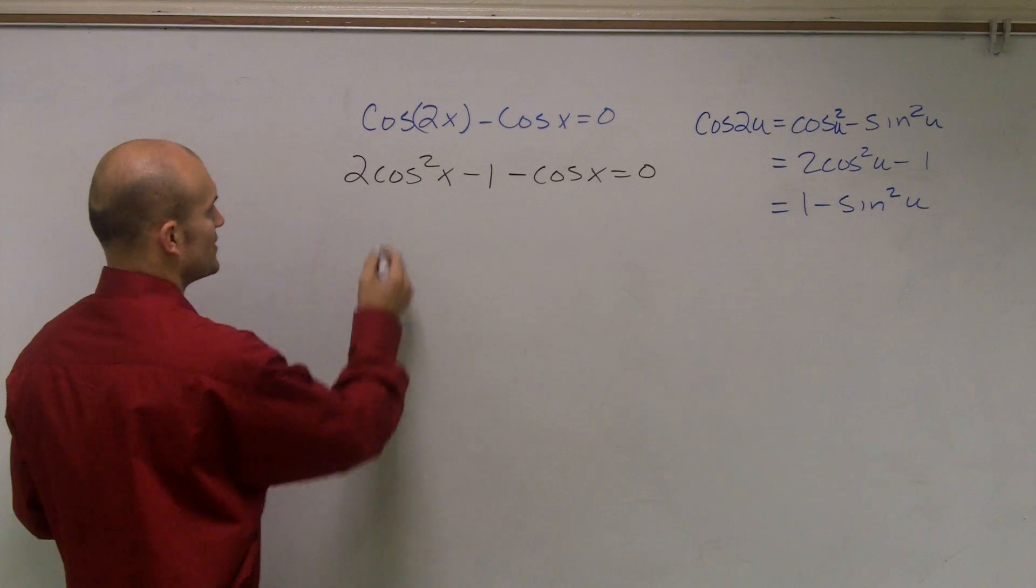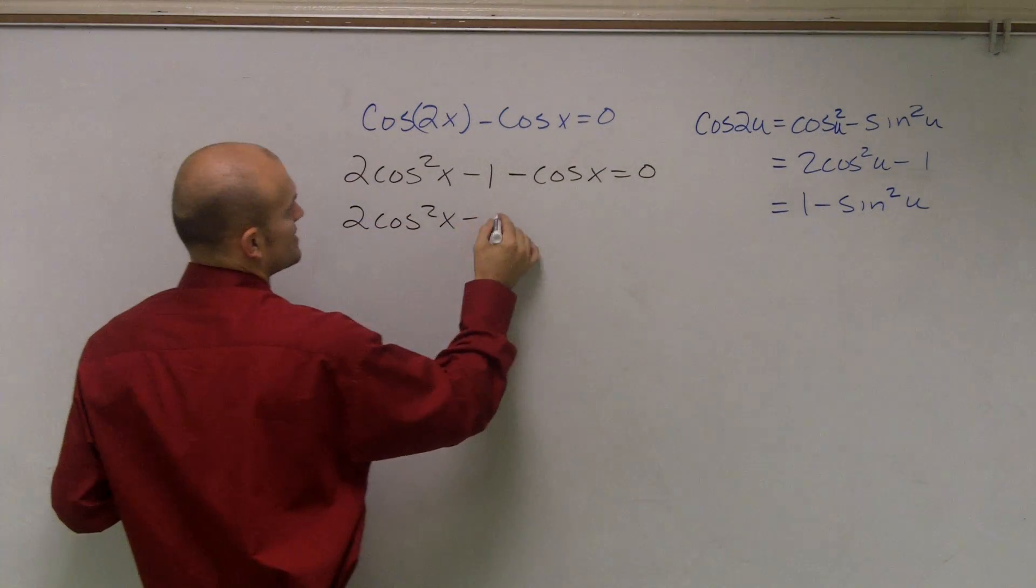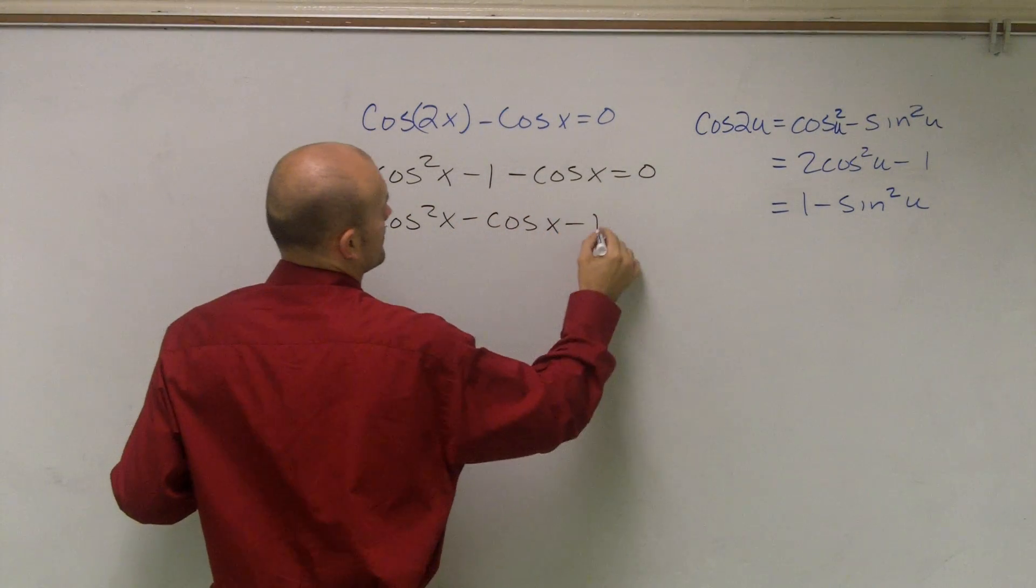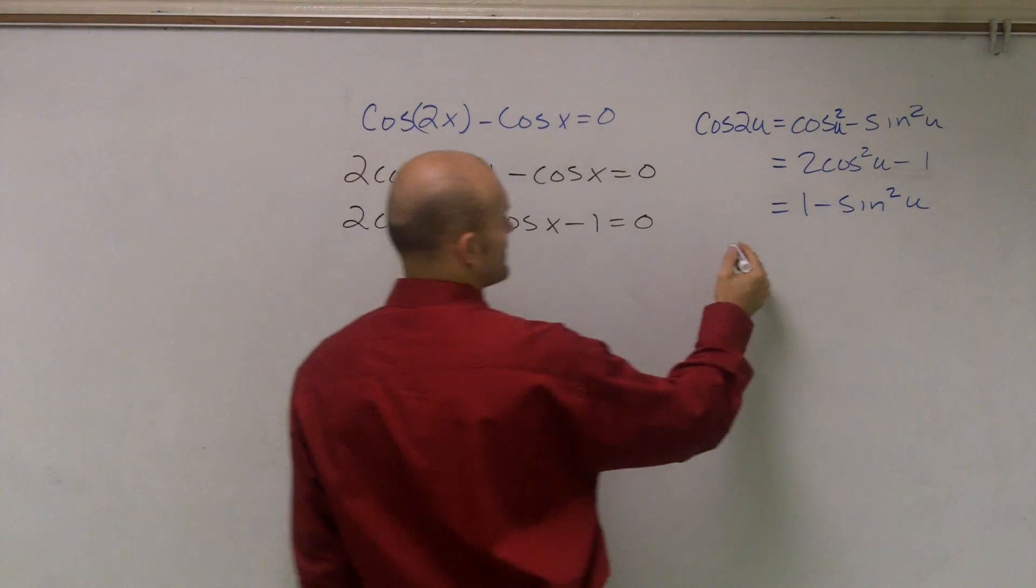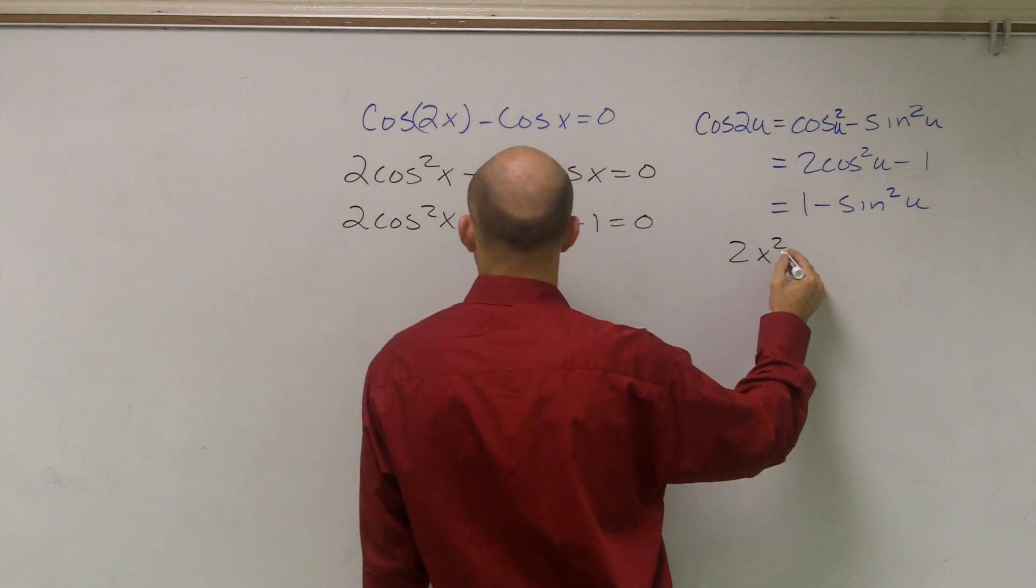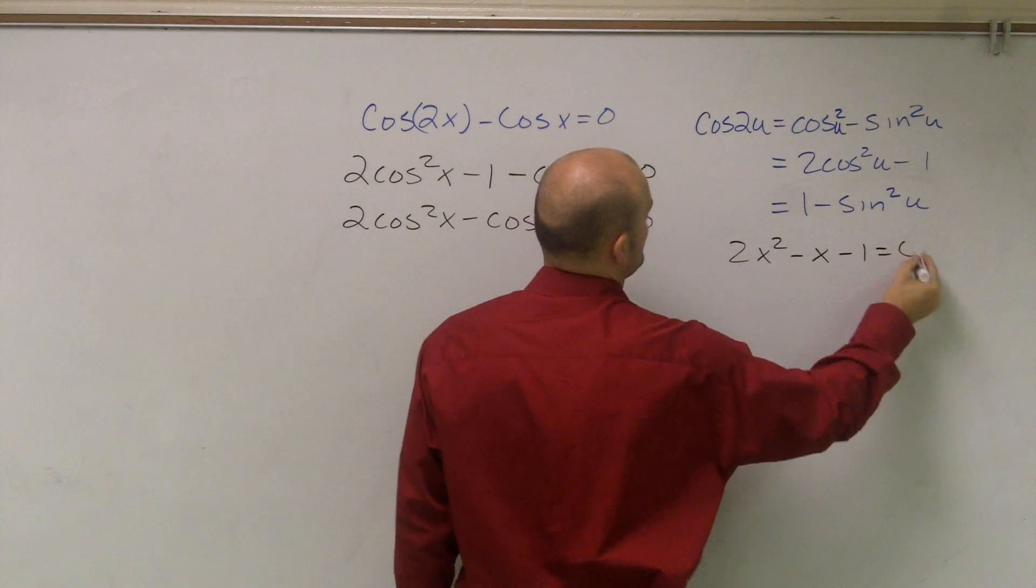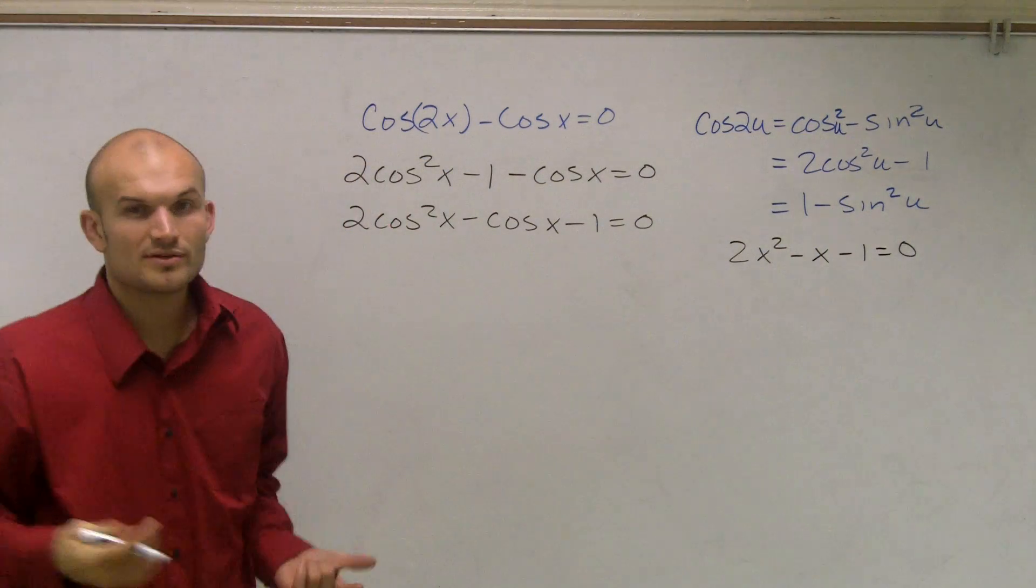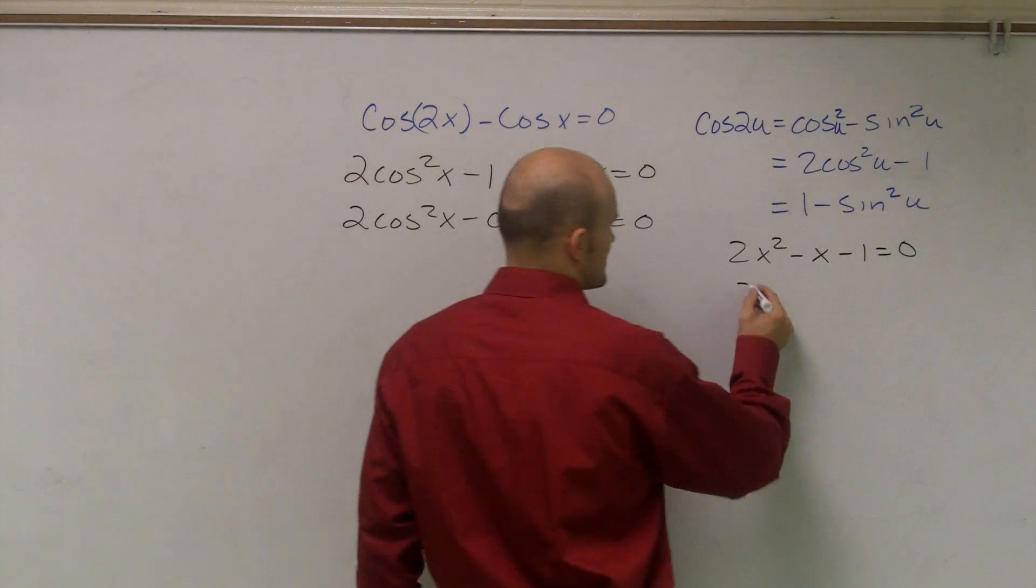So now what I'm going to do is I'm going to rewrite this in kind of a standard form. And what I'll notice is this follows a very resemblance of a trinomial that I can factor. If I kind of forget about my trig functions right now and I just rewrite it as 2x squared minus x minus 1 equals 0, what I'm going to do is I'm going to say, well, can I factor that? I mean, that's a trinomial. Let's see if we can factor this.